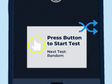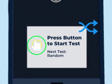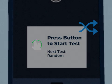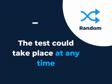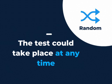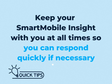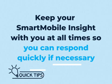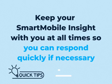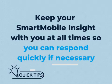If your next test window is random, your device will display "Next Test: Random." That means the test could take place at any time. This is why it's important to keep your Smart Mobile Insight with you at all times, so you can respond quickly if necessary.